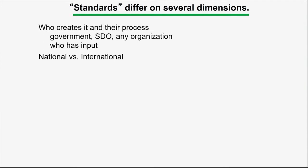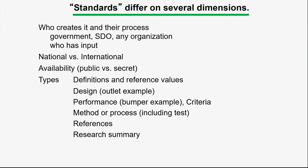The second is the breadth of application — is it a national standard, within a particular country, or an international standard? Is the document available publicly, is it some sort of trade secret, or is it an international standard like an ISO standard put out by a public standards organization? Finally, these documents differ in the kinds of content they contain. Many standards have a mixture of a variety of types.